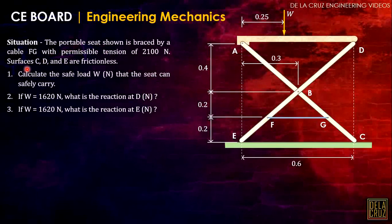Without any further ado, let's start to solve these problems. The first situation: the portable seat shown is braced by cable FG with permissible tension of 2100 newtons, and the surfaces C, D, and E are frictionless. The questions are: calculate the safe load W that the seat can carry. We base this on the allowable permissible tension.